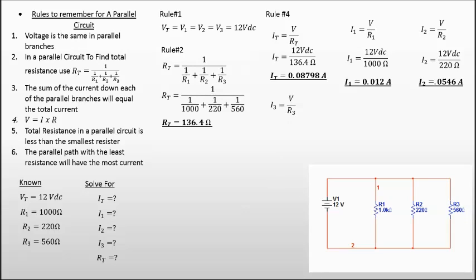Now finally, let's solve for I3. I3 is going to be your voltage over your R3, which is going to be 12 volts over your 560 ohms, which gives us a current of I3 equals 0.02143 amps.